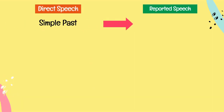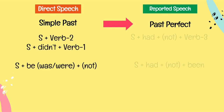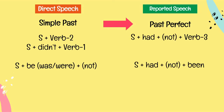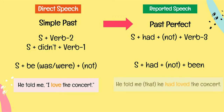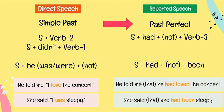Next is simple past to past perfect. See the patterns. He told me 'I love the concert' becomes he told me that he had loved the concert. She said 'I was sleepy' becomes she said that she had been sleepy.